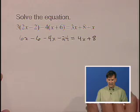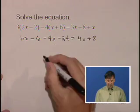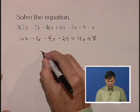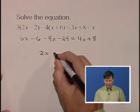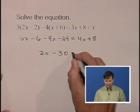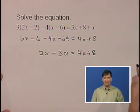Now we will collect like terms on the left-hand side. 6x and minus 4x is 2x. Minus 6 and minus 24 is minus 30. And we will just go ahead and write 4x plus 8 on the other side, since we already simplified that side.